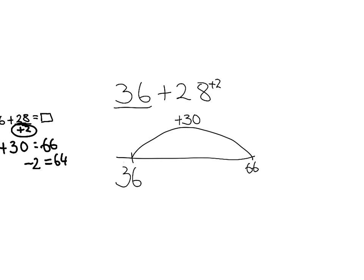Now once again, we need to subtract the two because we've added that, so now we need to take it off. So 66 minus 2 equals 64.